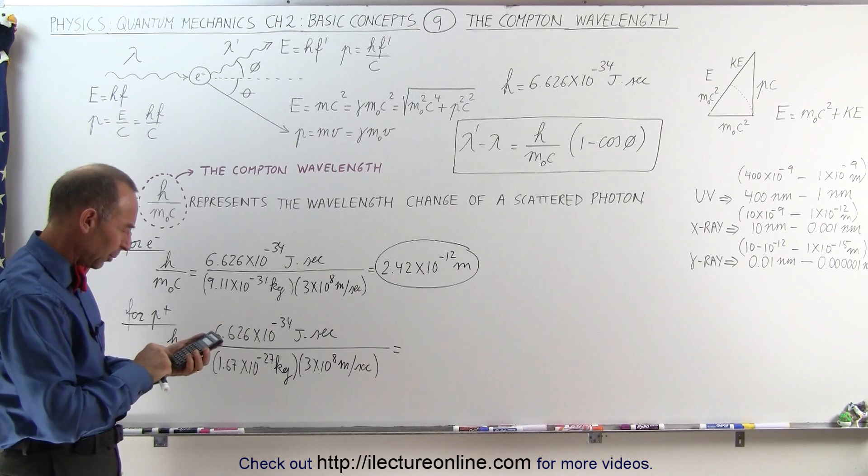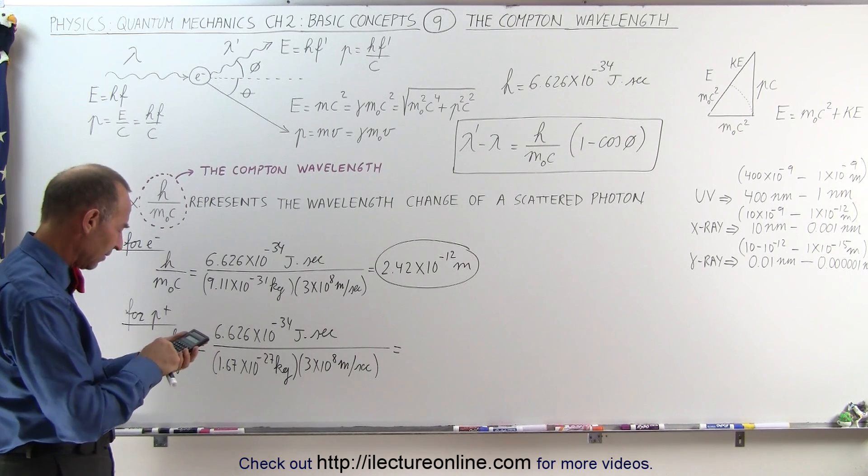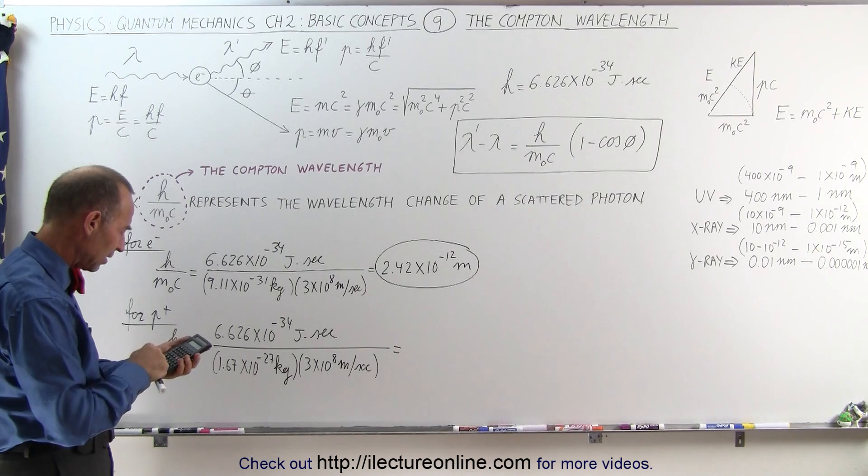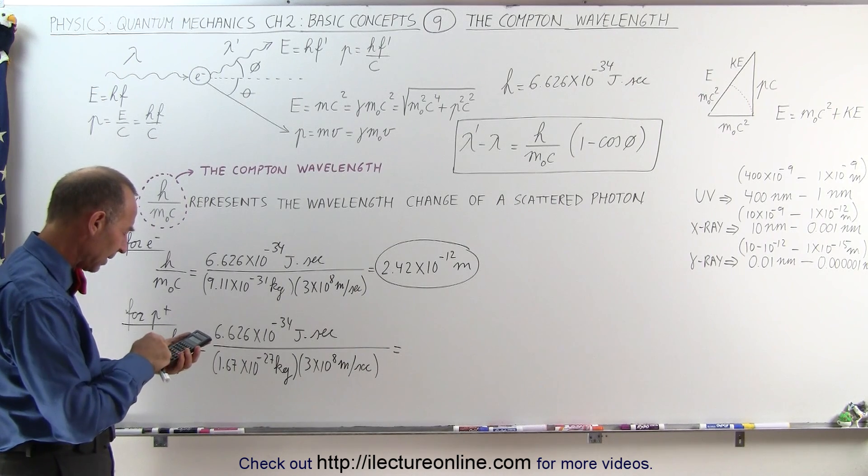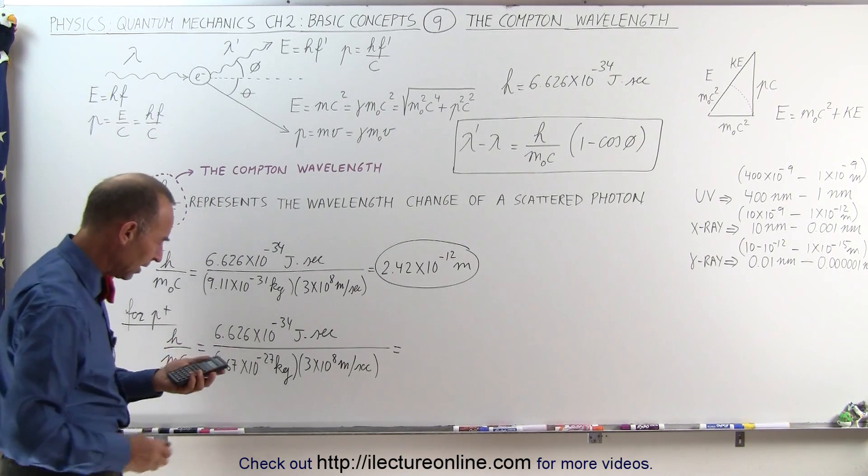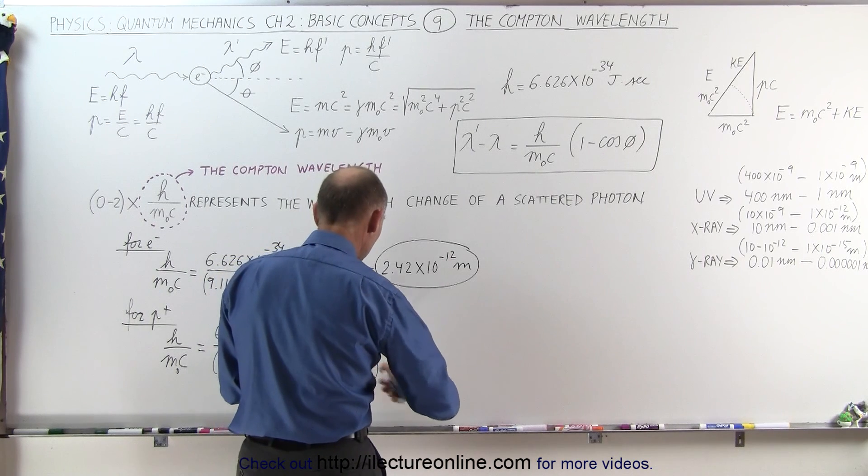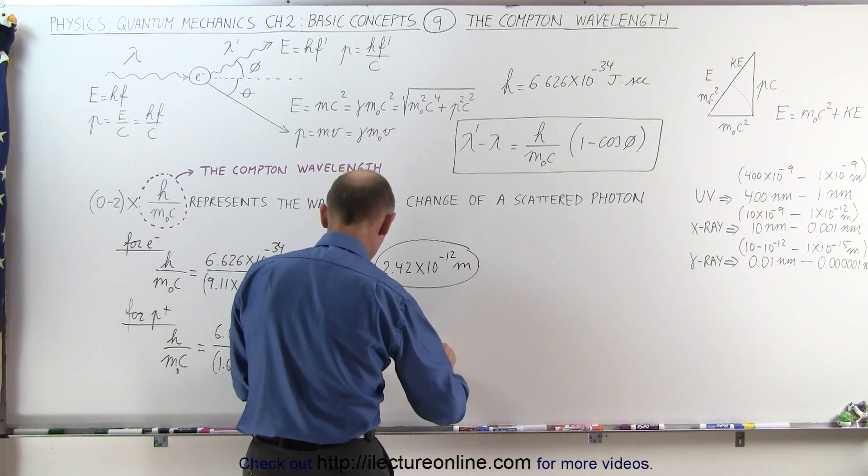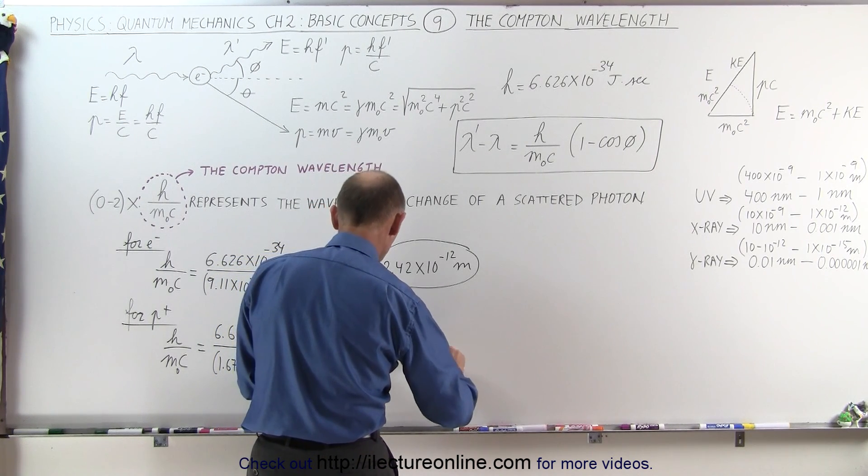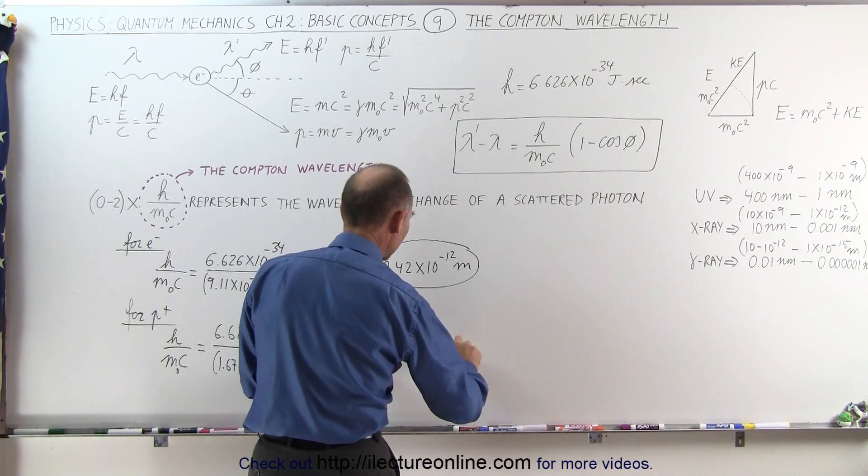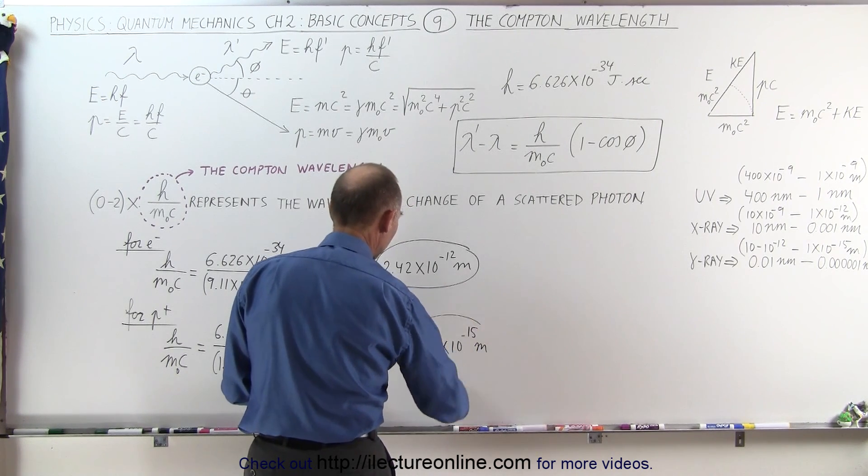So 6.626 e minus 34, divide by 1.67 e to the minus 27, and divide by 3 e to the 8 equals. And notice, here the change in the wavelength would be as small as 1.32 times 10 to the minus 15 meters.